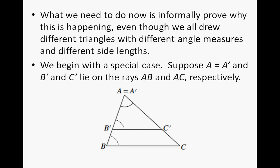We're going to begin with this special case. Suppose that A is equal to A prime, and B prime and C prime lie on the rays of AB and AC, respectively. This is kind of the case of two overlapping triangles.